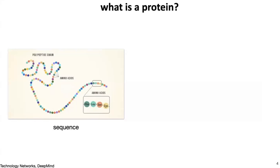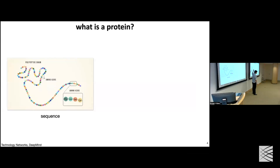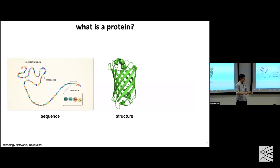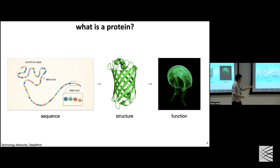Let's talk about the problem of protein function prediction. A protein is a polypeptide chain — a very long sequence over an alphabet of 20 amino acids. Proteins don't stay as linear sequences; they fold into particular 3D structures. Because of the 3D structure and the interactions between amino acids, they express specific functions. The protein shown here is GFP, green fluorescent protein, with an interesting cylindrical structure.